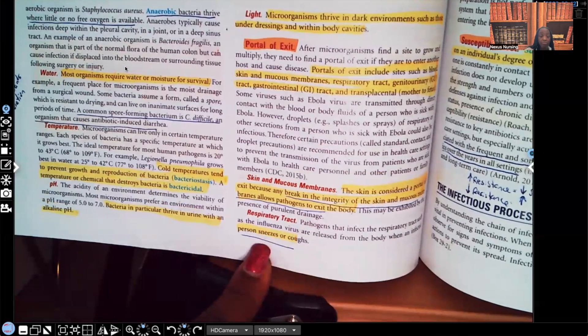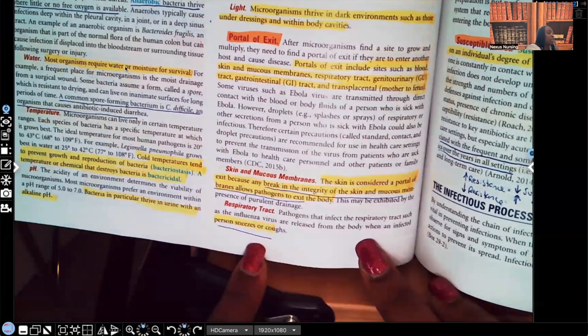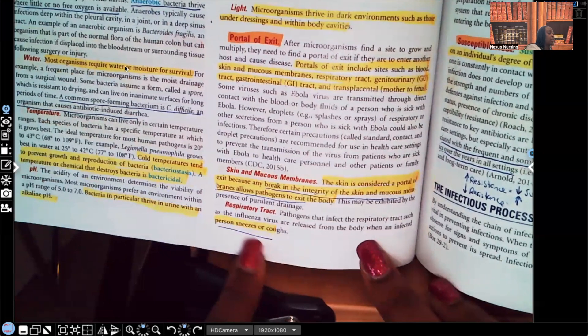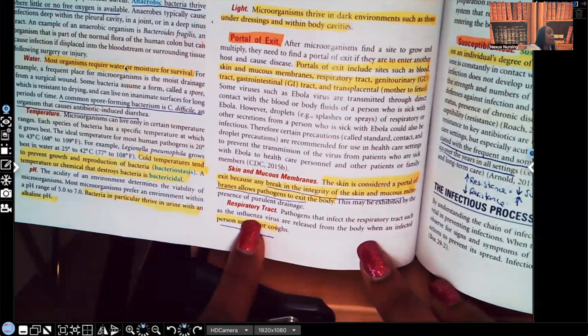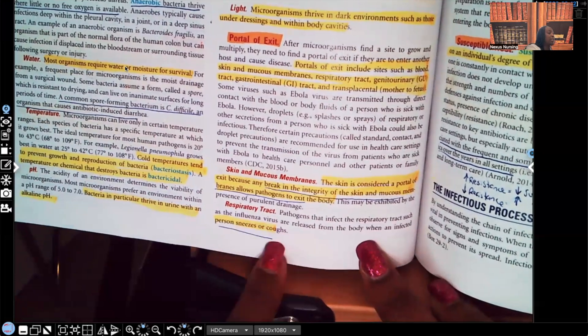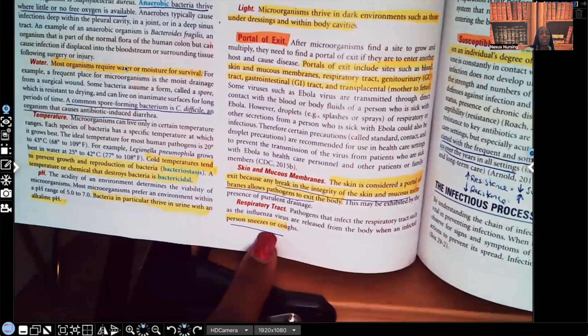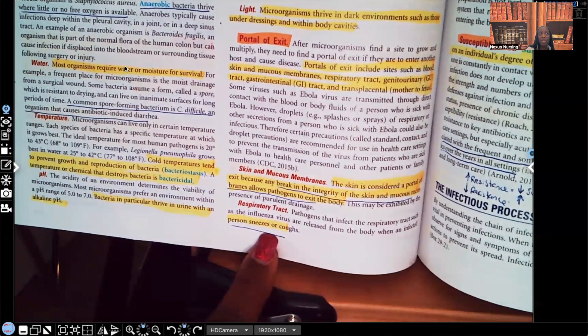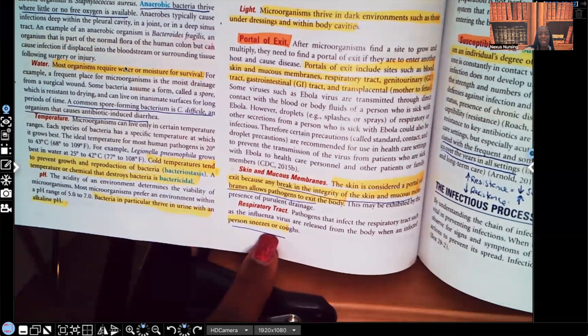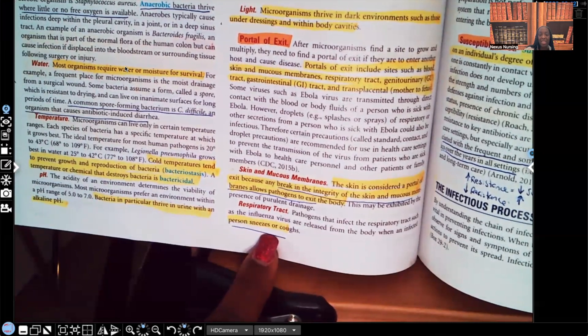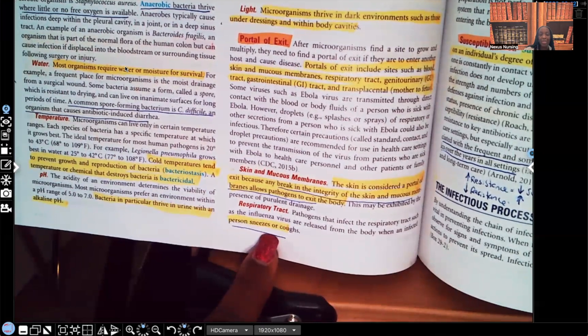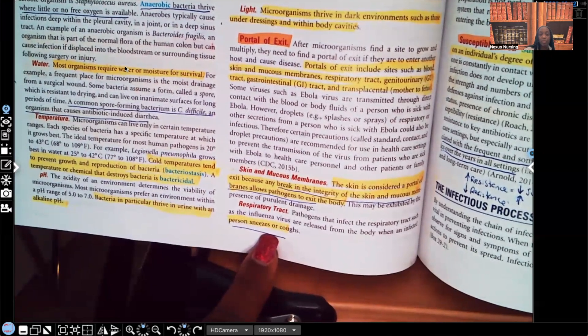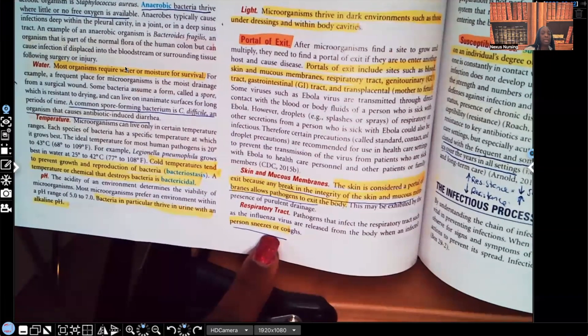Respiratory tract. It says pathogens, in fact, the respiratory tract, such as influenza, that's the flu, influenza virus are released from the body when infected person, look at this, sneezes or coughs. So this pathogen was in person's body and then they sneeze or cough and it exits the body through that sneeze or cough. They're really exiting the body through what? That respiratory tract. Let's keep going.